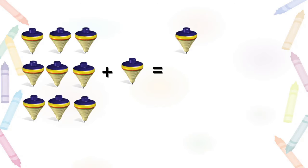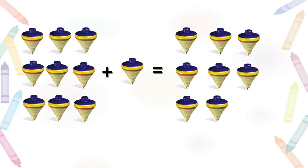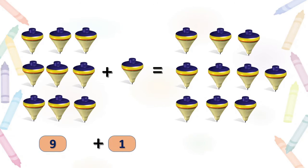Here you can see tops — 1, 2, 3, 4, 5, 6, 7, 8, 9. There are 9 tops. Now we will add 1 more top to these 9 tops. Then what will we get? See — 1, 2, 3, 4, 5, 6, 7, 8, 9 and this is the 10th one. So, 9 tops plus 1 top gives us 10 tops. When we add 1 to 9, it gives us 10.